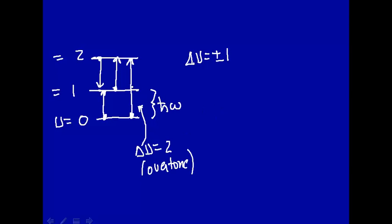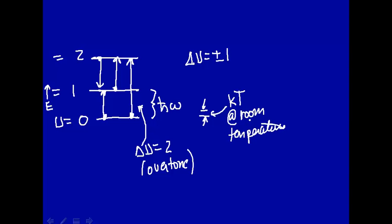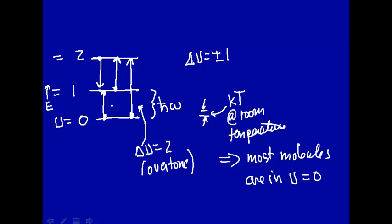If you look at the separation of these two energy levels and compare it to kT at room temperature — recall that energy increases going up — kT at room temperature is small compared to the energy level separation. This means most molecules are in the lowest vibrational energy state, ν = 0. So virtually all the intensity seen in the IR spectrum comes from transitions going from ν = 0 to ν = 1. You may also see maybe double that frequency if overtones are present.